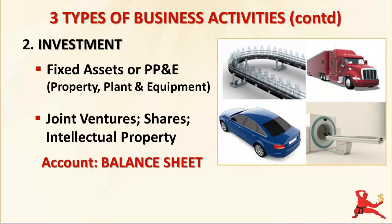Only the cost of using these assets goes through the profit and loss. For example, the cost of using plant and equipment is called depreciation, and it's recorded as a non-cash expense item in the Profit and Loss.